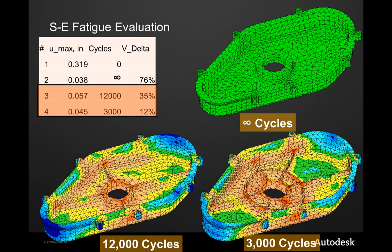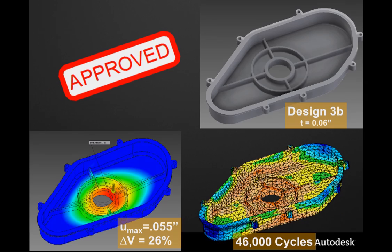Let's continue to iterate the design further. Compromising between design options three and four, we can come up with a design that has a slight increase in wall thickness and a few added structural reinforcements. The predicted performance of the part meets our requirements, with an increase in plastic volume of just 26%. Compare that with the option of simply doubling the wall thickness, which was a 76% increase in plastic material. I'm making intelligent choices up front to make the best designs.